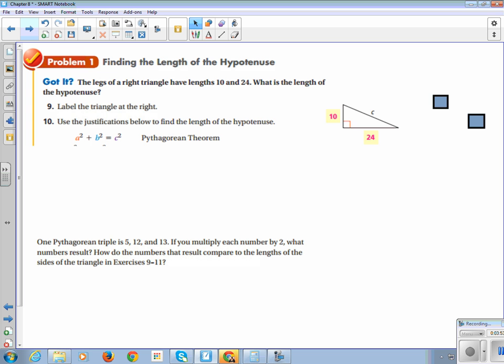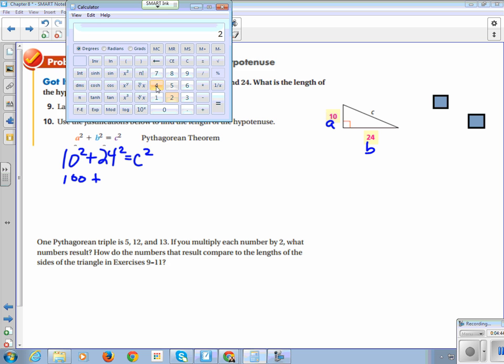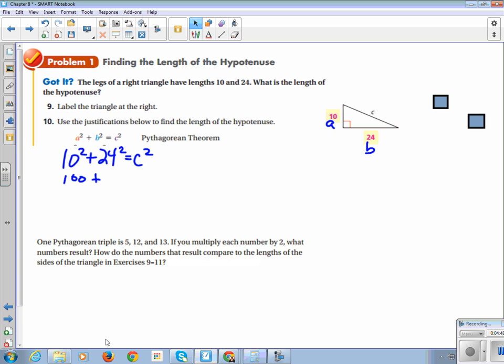So if you look at our right triangle, the legs are 10 and 24. We are going to solve this using Pythagorean theorem. We start out, a squared plus b squared equals c squared. I am going to call this a and call this b and I am going to substitute my values into my equation. So I know what 10 squared is, but I do not have 24 squared memorized. So I am going to pull up my calculator and 24 squared is 576.